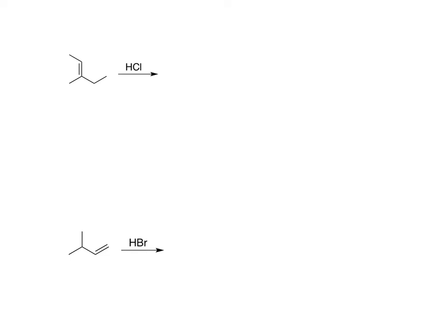Hi everybody. So what we're going to look at now is what happens when you take an alkene, a carbon-carbon double bond, and react with HCl, or HBr, or we could even use HI.